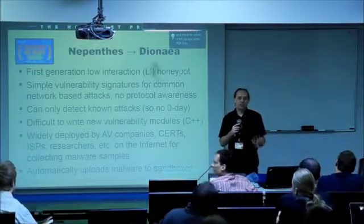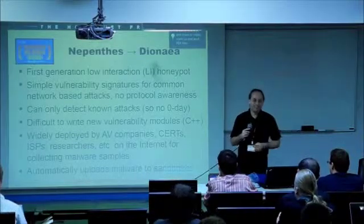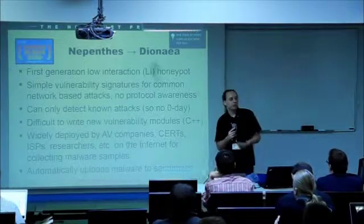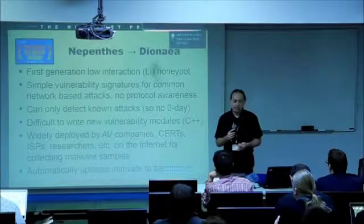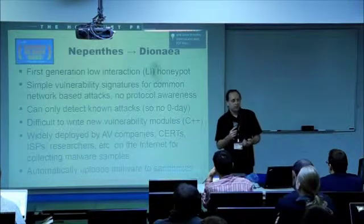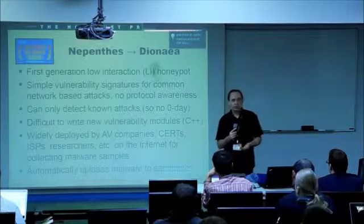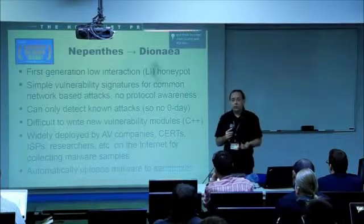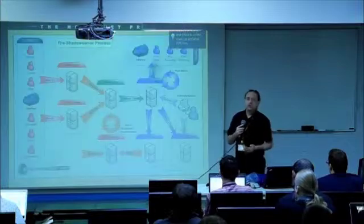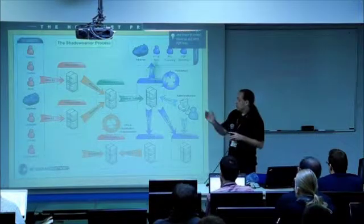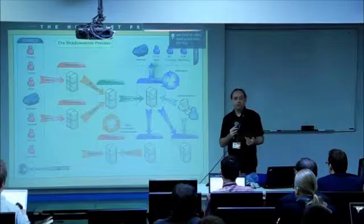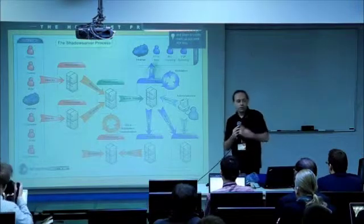Nepenthes is a first-generation honeypot. It's signature-based — you have to write modules for any vulnerability. So you can't catch a zero-day with Nepenthes. If you've tried writing a module for it in C++, it's pretty difficult and quite time-consuming. When MS08-67, the Conficker vulnerability, came out, it took about two weeks to write a module for it — so we didn't see it in the first two weeks. It's still widely used by AV vendors, universities, and companies, and it's often used for automated uploading of malware. Groups like Shadow Server use it: you have networks of honeypots around the world, collect malware, put it into a central sandbox, execute the binary samples, analyze what the binary does, and record the data.